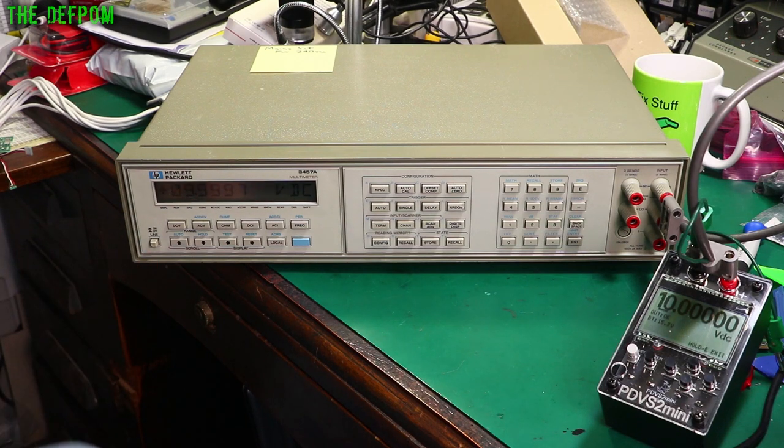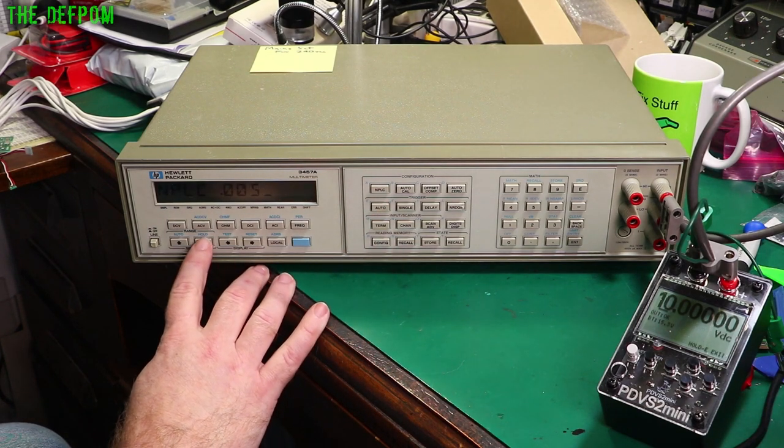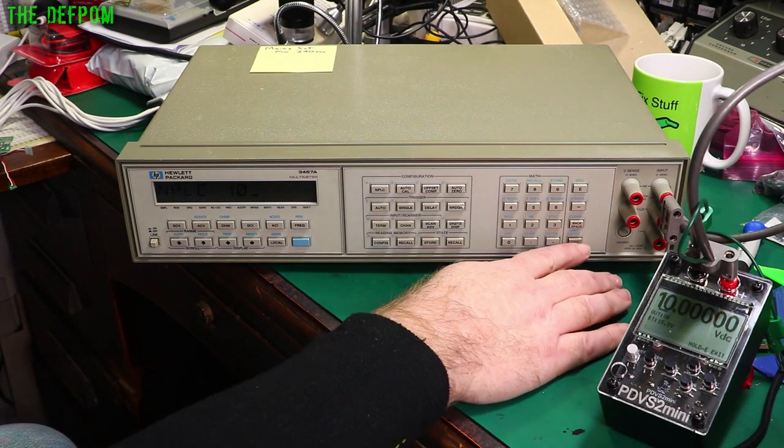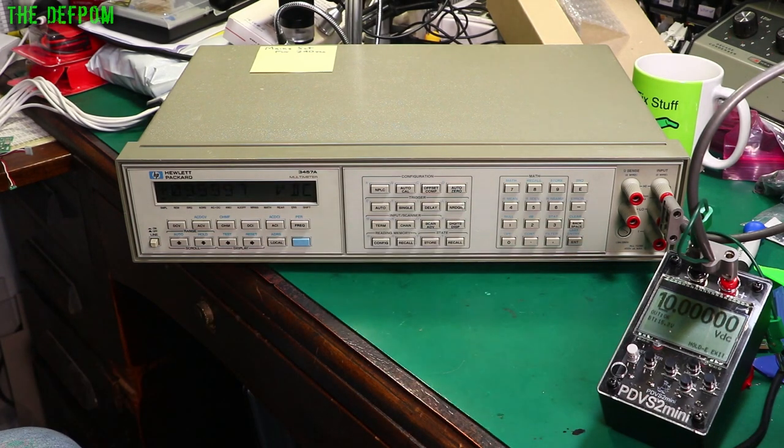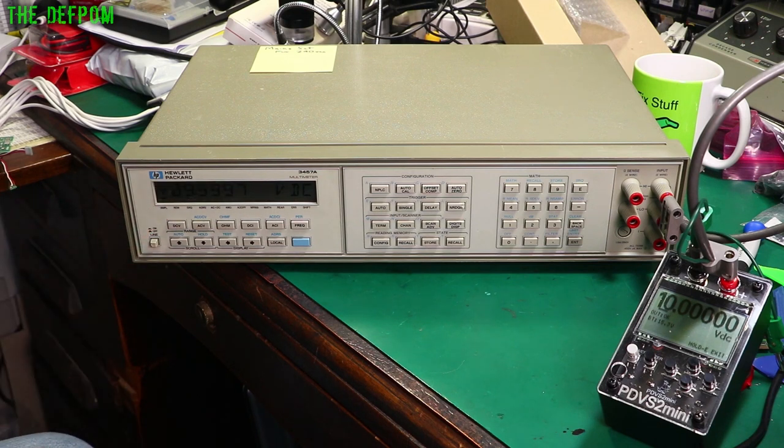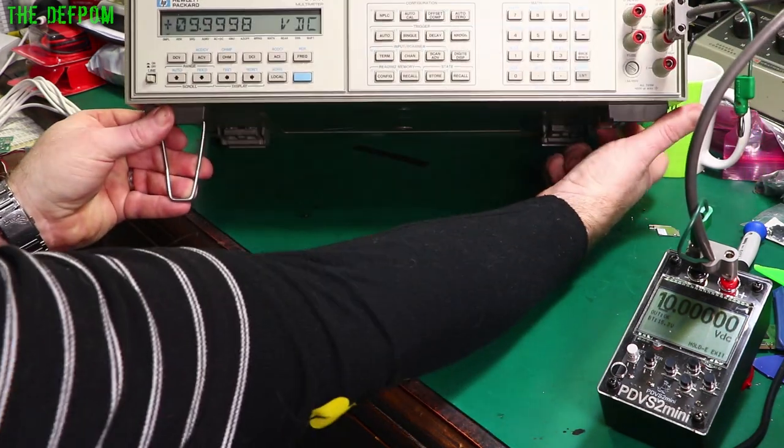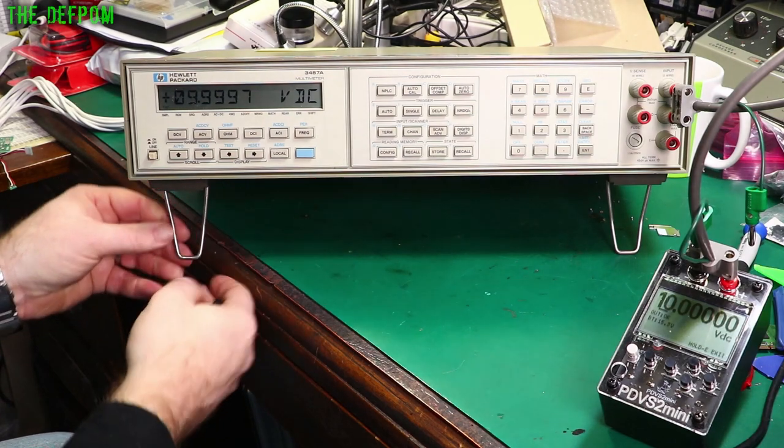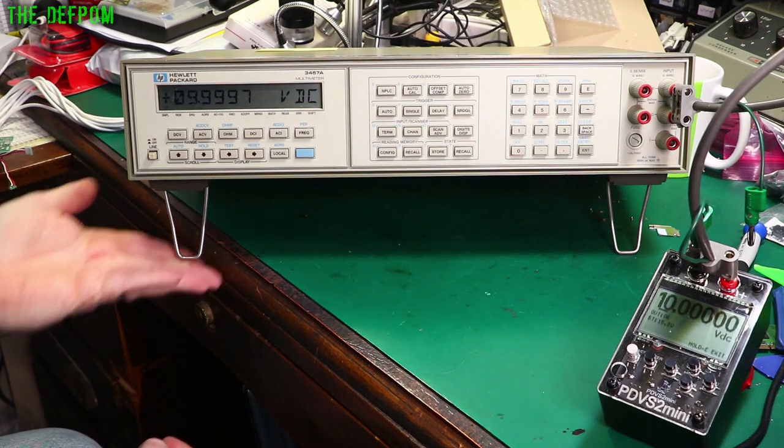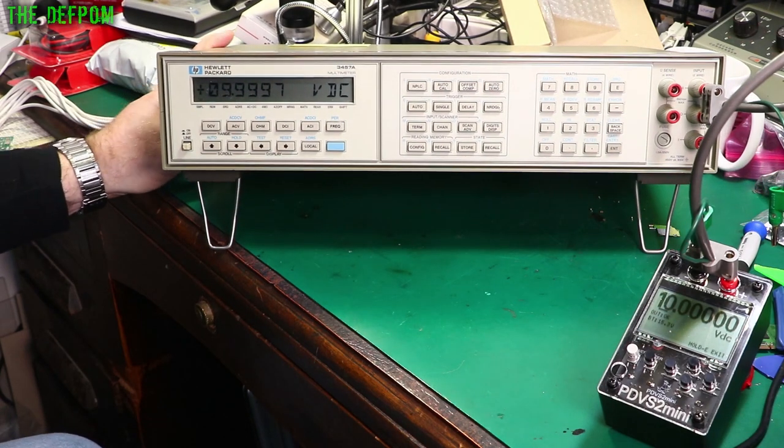And it seems nice and stable. I've set it to 100 power line cycles. I did figure that much out. So you've got PLCs over here and you can change it to what you want through this range. Let's just do 10 for example. That'll be much faster sampling. You can see the sample indicator over here.